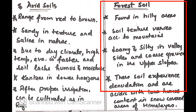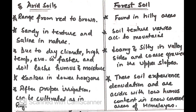Next is forest soil. These soils are found in hilly areas. Soil texture varies according to the mountains — loamy and silty in valley sides and coarse grain in the upper slopes. These soils experience denudation and are acidic with low humus content in snow-covered areas of the Himalayas.